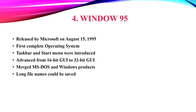Four: Windows 95. Released by Microsoft on 15th August 1995. First complete operating system. Taskbar and start menu were introduced. Advanced from 16-bit GUI to 32-bit GUI. Merged MS-DOS and Windows products. Long file names could be saved.